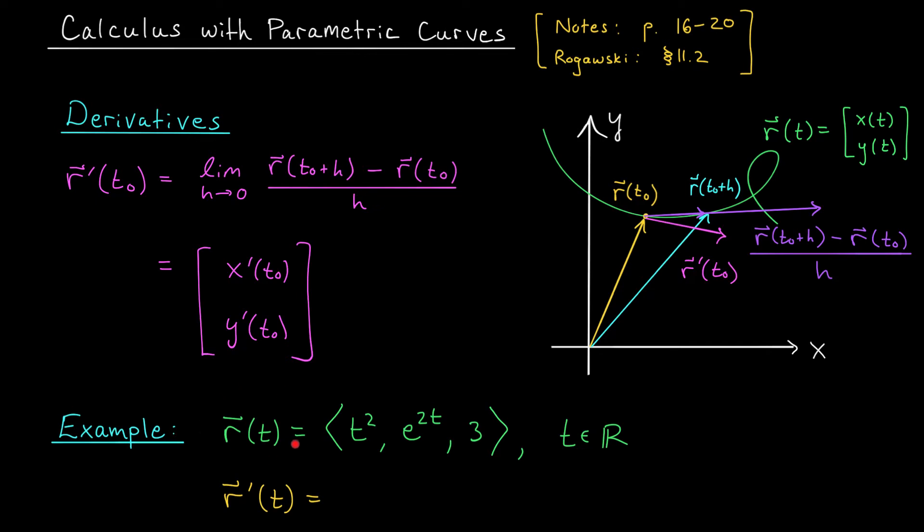Consider this vector function r(t). To find its derivative, r'(t), we're supposed to differentiate entry-wise. The derivative of my first entry is 2t. The derivative of my second entry, using the chain rule, is 2e^(2t). And the derivative of my third entry is 0.